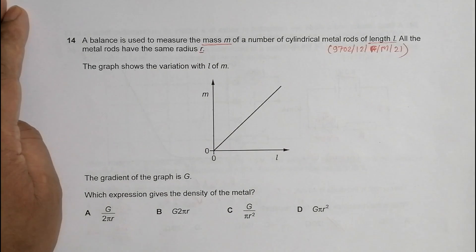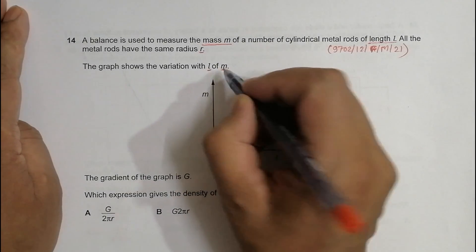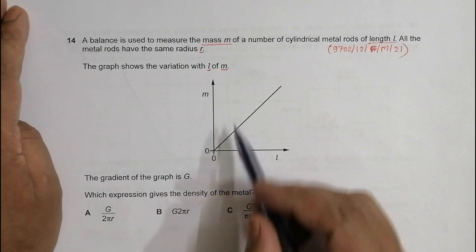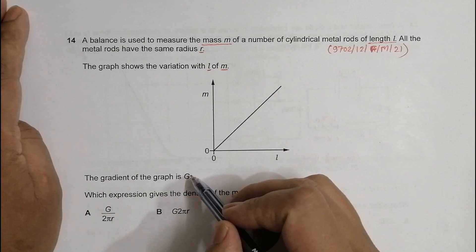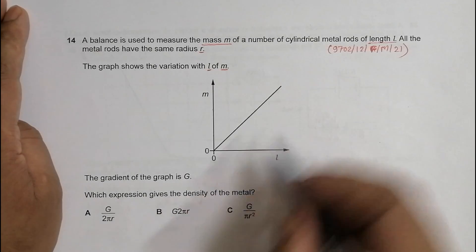The graph shows the variation with L of M. So M and L: M in the y-axis, L in the x-axis. The gradient of the graph is G. Since we have M here, they have used a symbol G for the gradient. Which expression gives the density of the metal?